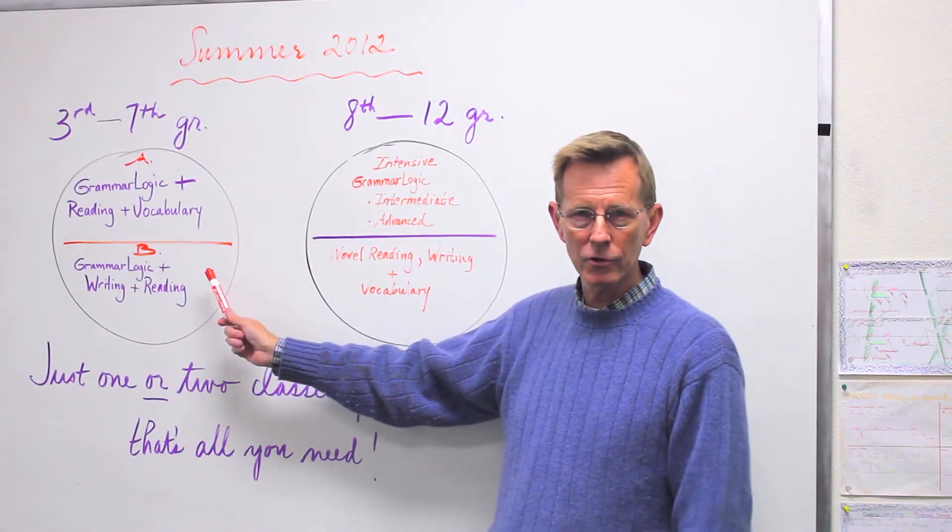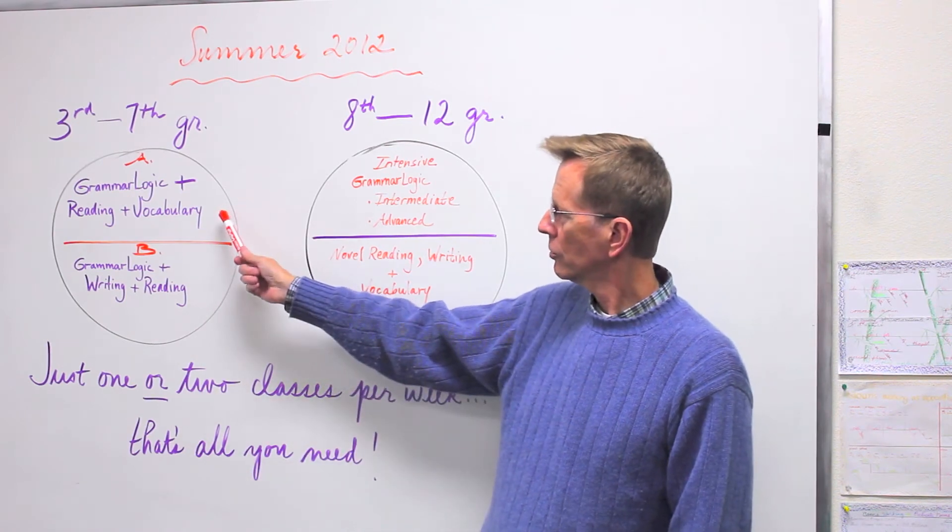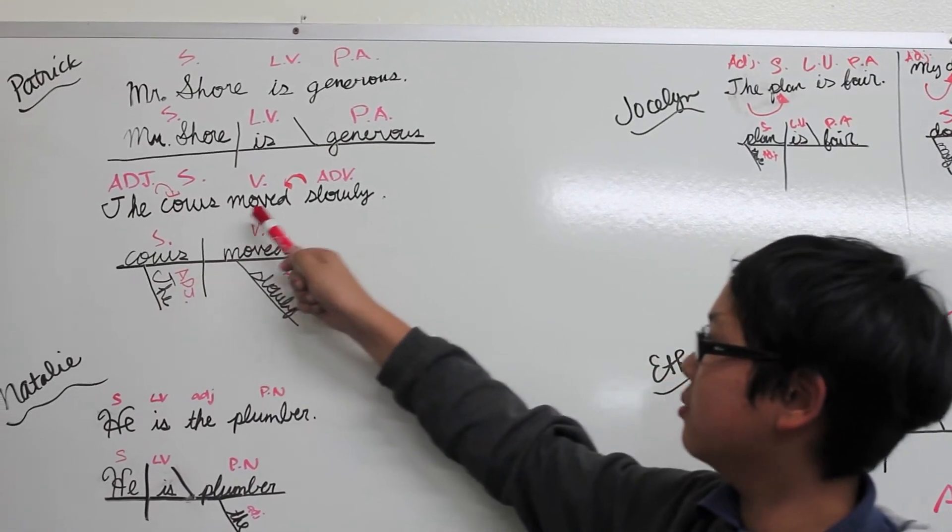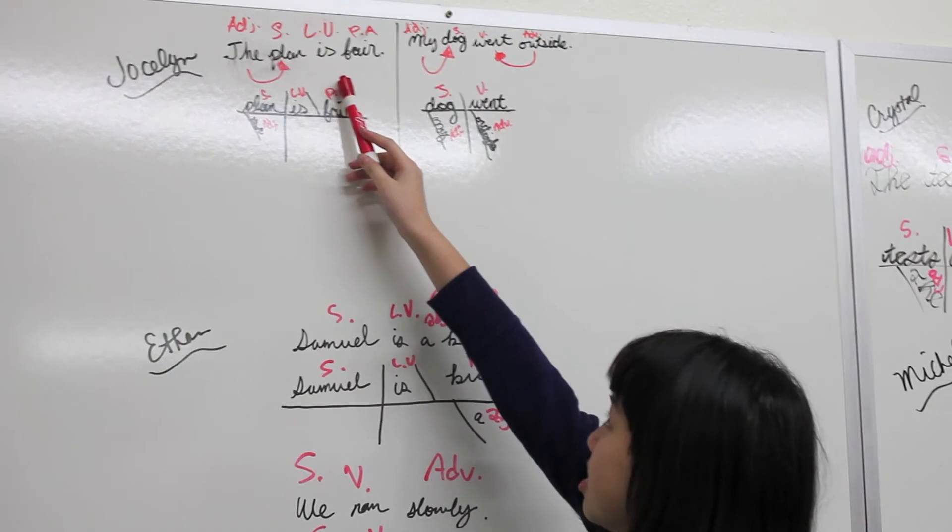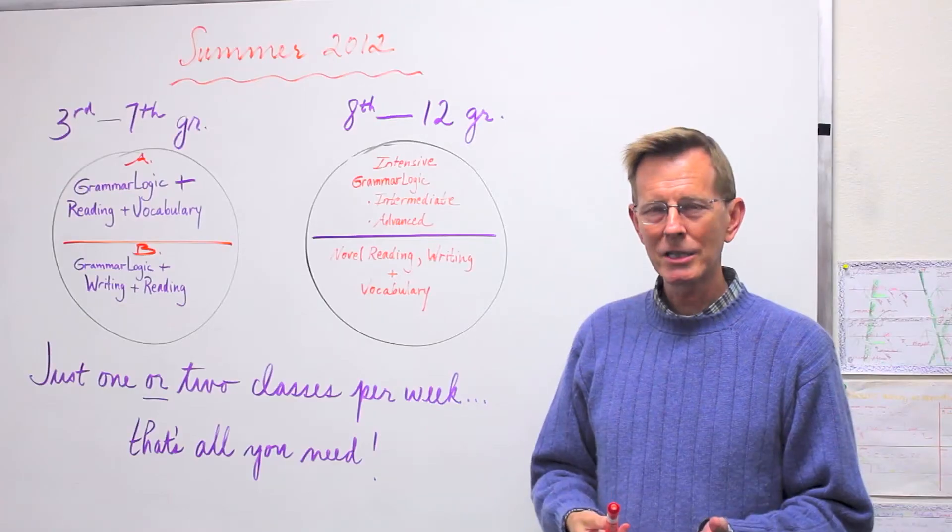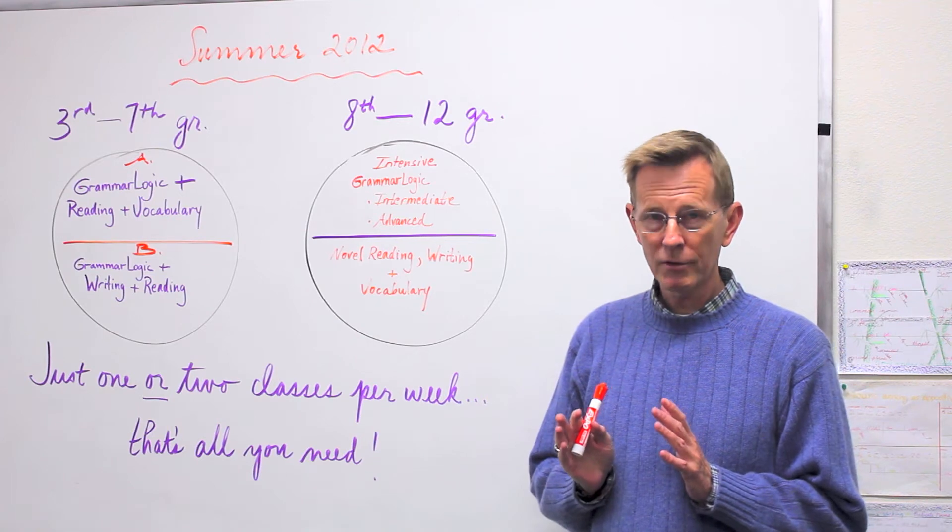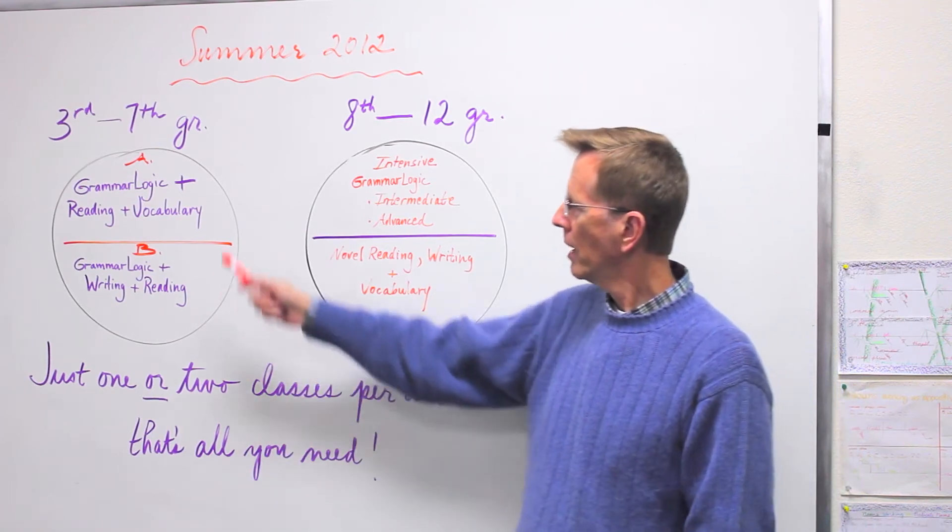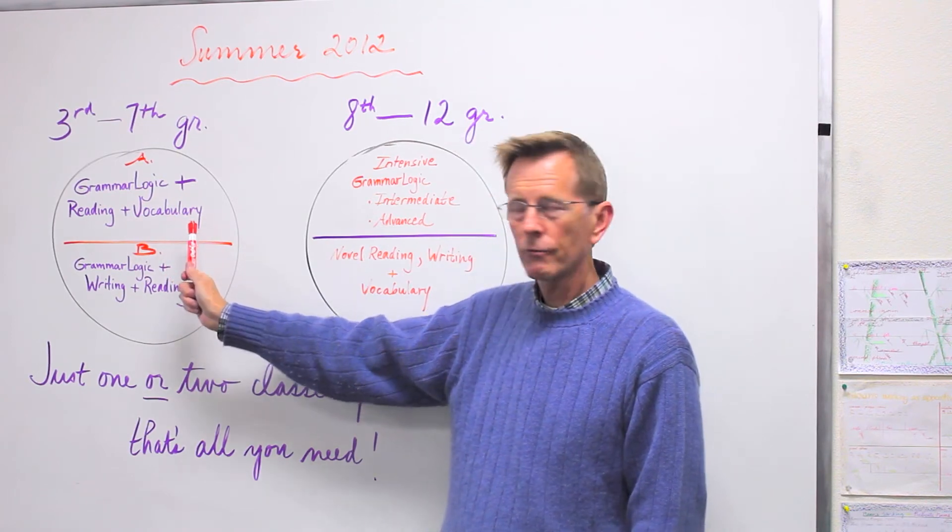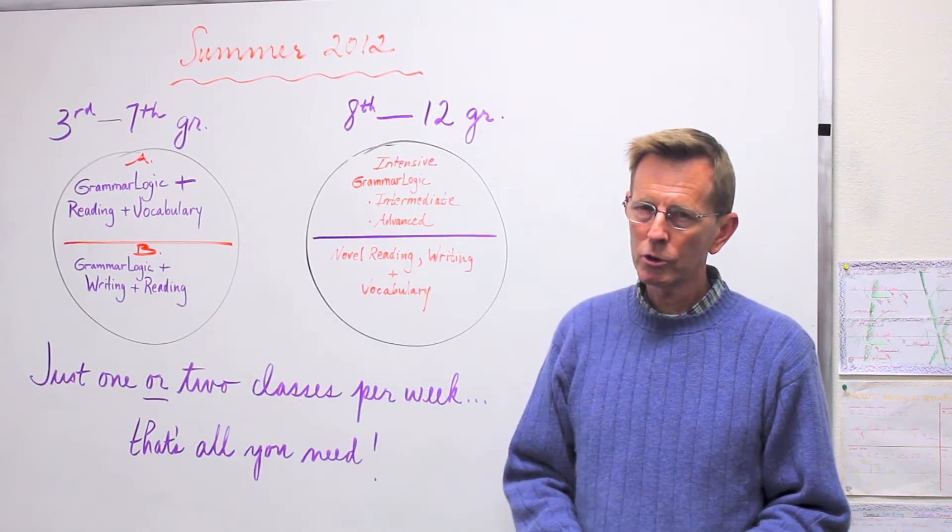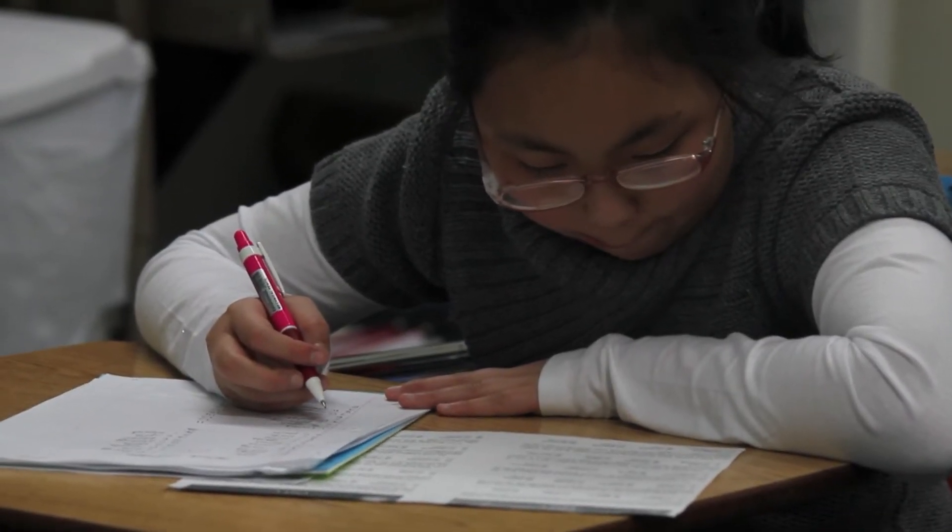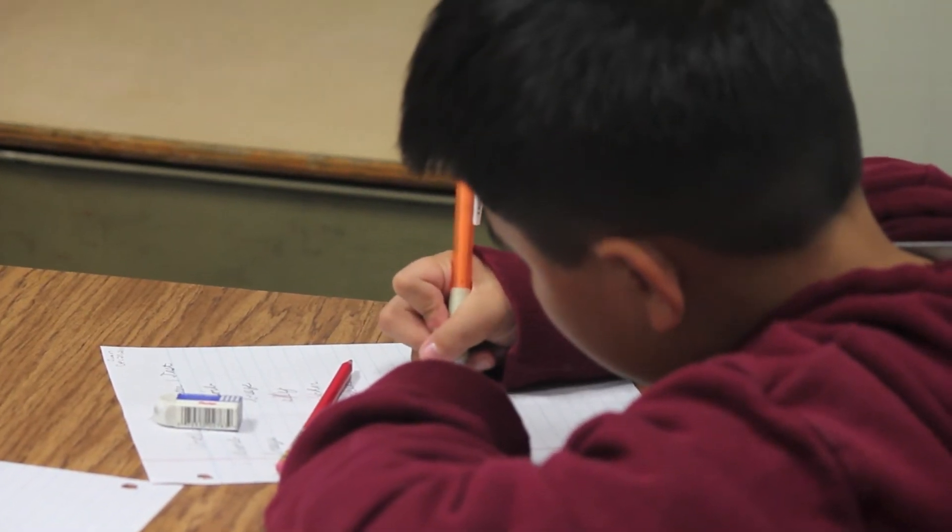we have two classes that are offered. The first, Class A, is Grammar Logic, which is our basic introductory grammar training, which involves sentence diagramming, parts of speech recognition, and all of the elements of a simple sentence. We have the Grammar Logic training combined with reading and vocabulary. Our vocabulary work also includes compound and complex sentence writing with the vocabulary. So there is writing in this part of the program.